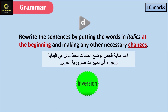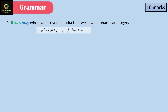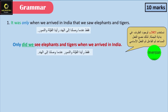Question D. Rewrite the sentences by putting the words in italics at the beginning and making any other necessary changes. 'It was only when we arrived in India that we saw elephants and tigers.' Answer: Only when we arrived in India did we see elephants and tigers.